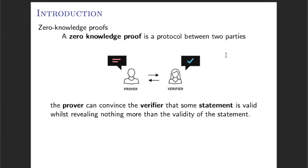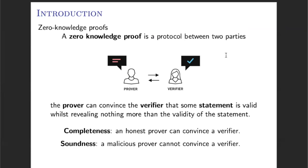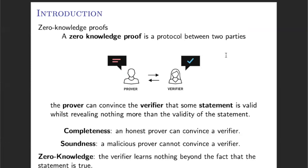This protocol has to fulfill three different properties. The first two are completeness and soundness. Completeness requires that in case the prover is being honest, then he has to be able to convince the verifier. Soundness means that in case he's lying, the verifier is going to be able to detect this. The third extra property, and the one that characterizes these protocols, is Zero Knowledge. This property states that from all this process, the only thing that the verifier is going to learn is that the statement is true.